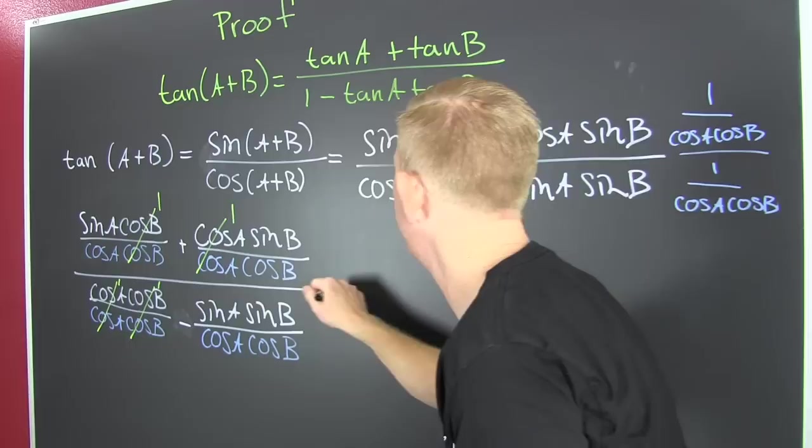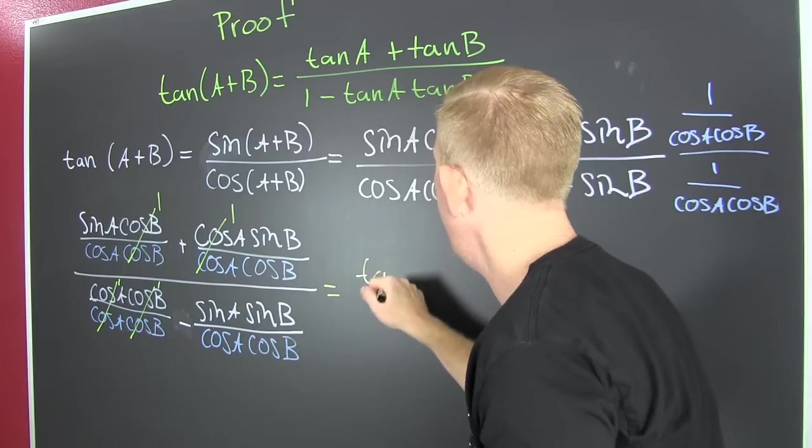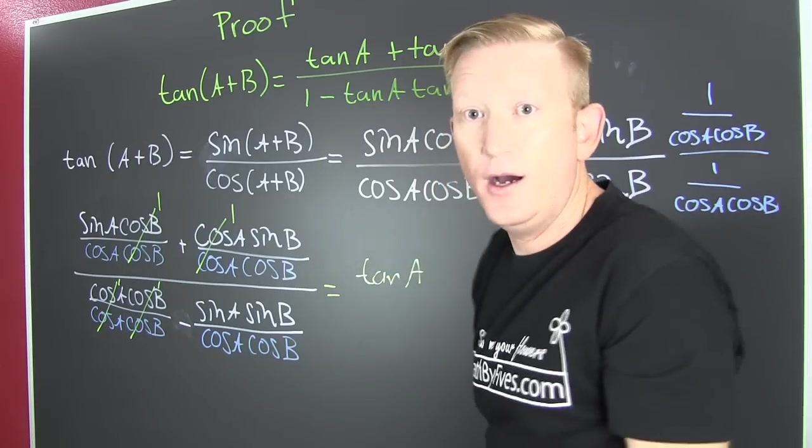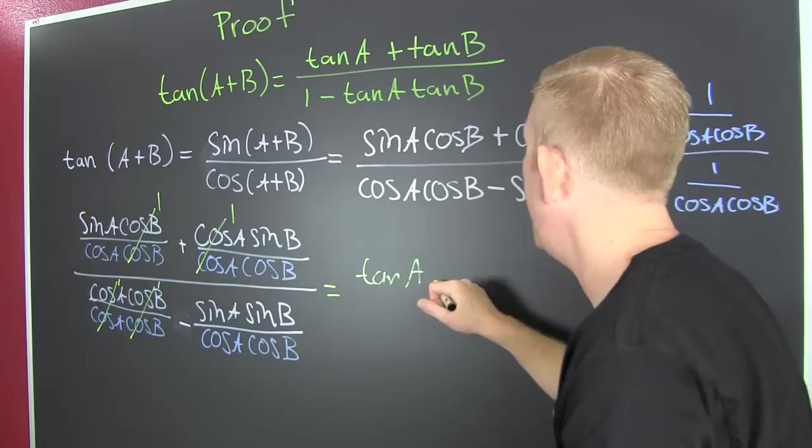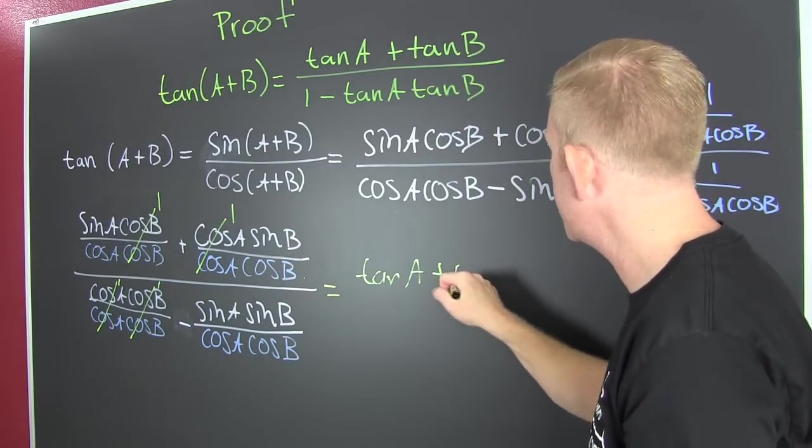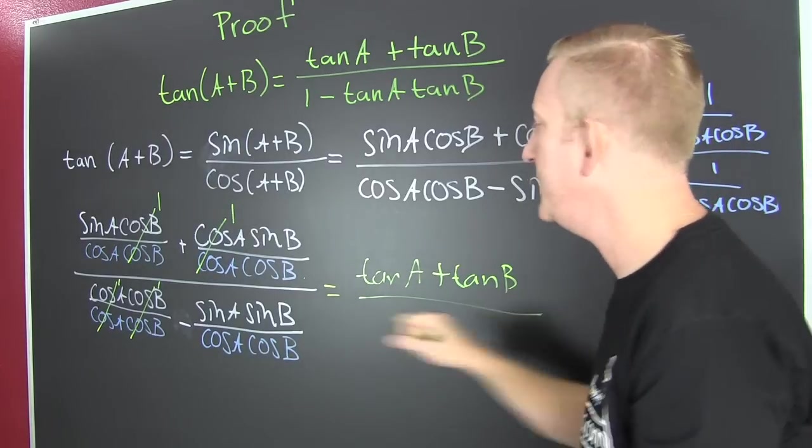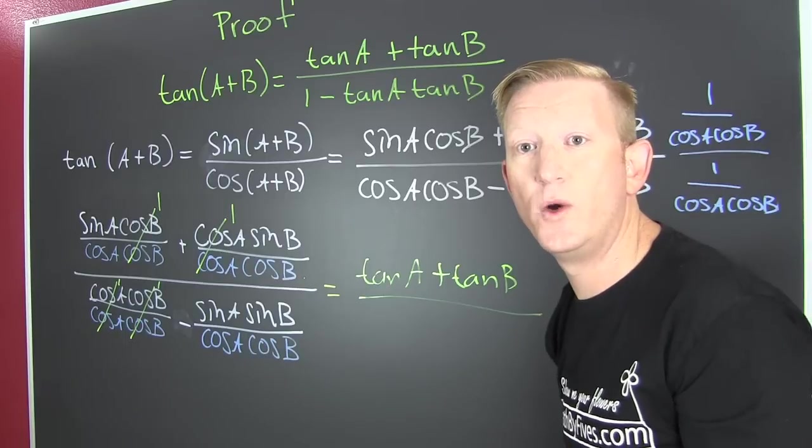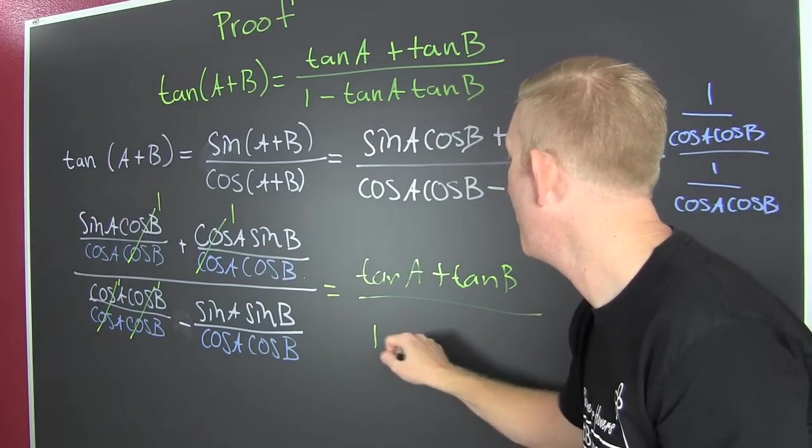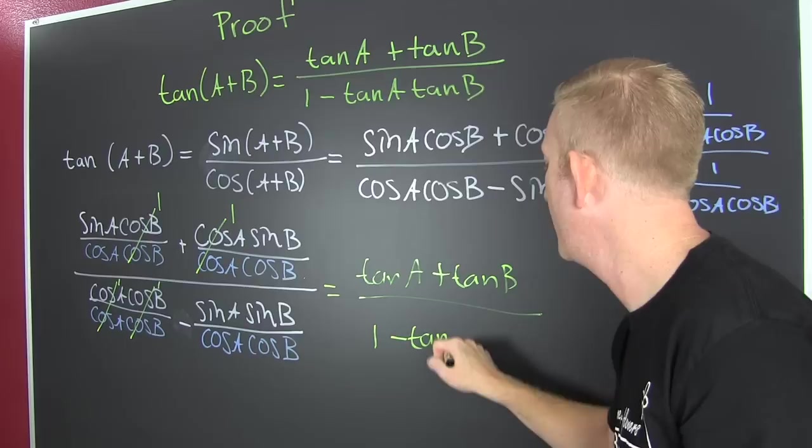I'm looking at that over there. What do I have? Sine A over cosine A. That's the tangent of A. And then that's plus sine B, cosine B. That's the tangent of B. Then we see that's all over one times one, one, minus sine A over cosine B is the tangent of A. Cosine B over cosine B is the tangent.